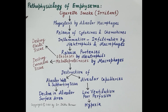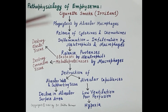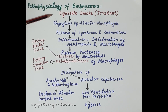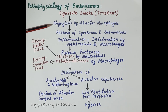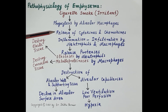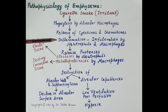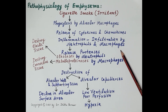Now let's understand the pathophysiology of emphysema with a simple schematic diagram. Cigarette smoke particles are inhaled and in the lungs they are engulfed by alveolar macrophages. During phagocytosis, alveolar macrophages release inflammatory mediators — cytokines and chemokines — which induce inflammation of the respiratory mucosa. This is followed by infiltration of neutrophils and macrophages into the respiratory mucosa.